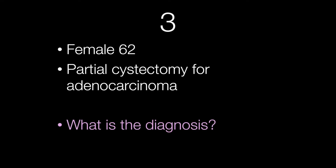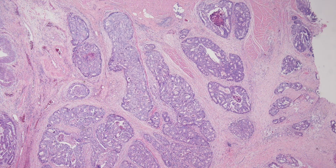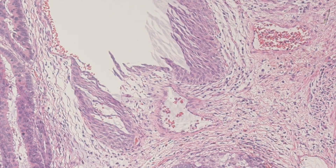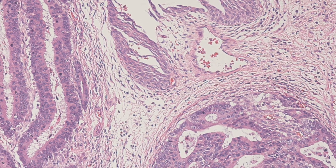Case number three is another female of 62 who had a partial cystectomy for adenocarcinoma. What is the diagnosis? This is a low power view. There is clearly tumour here, but is it arising from the urothelium? Here are a few more fields to assess the tumour.